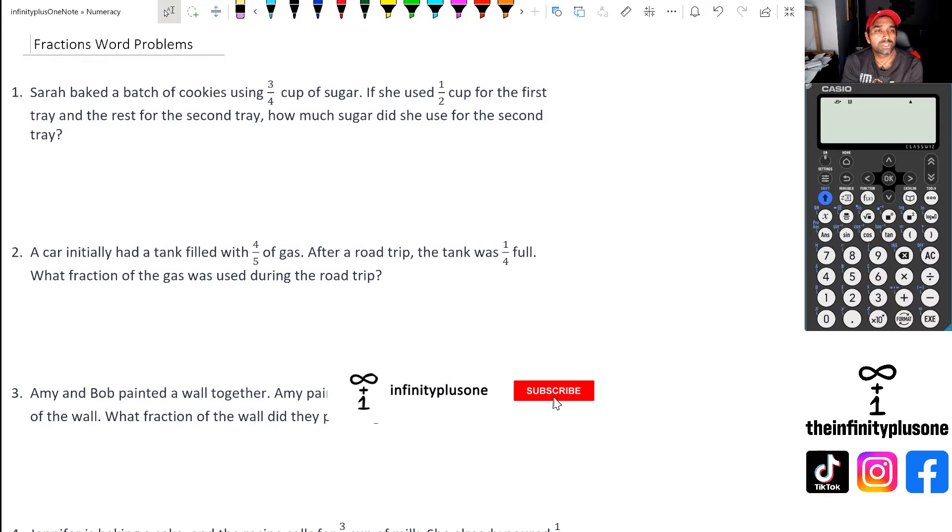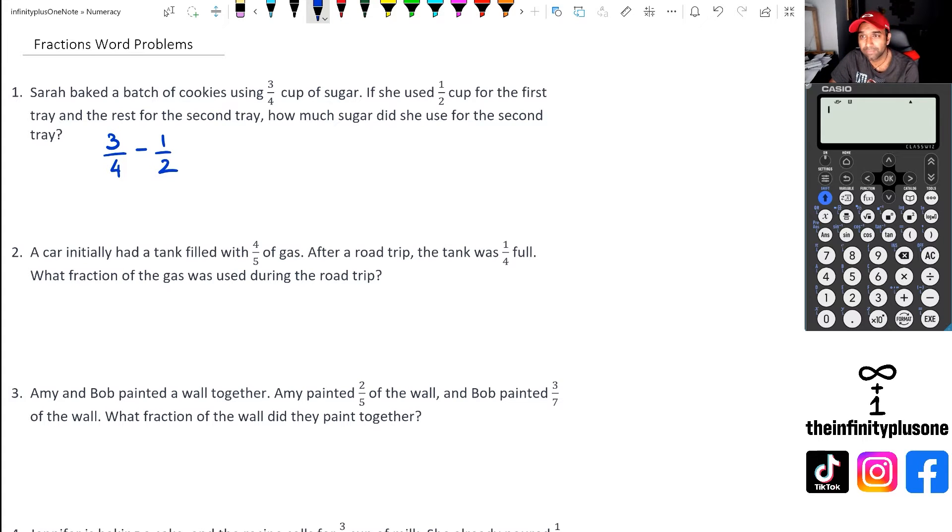Okay, so looking at question one, what we've got here is Sarah's baking, making a batch of cookies using three quarter cup of sugar. If she used half cup for the first tray and the rest for the second tray, how much sugar did she use for the second tray? So we've got three quarters and we are doing take away a half and we're trying to figure out what that is going to be. And if you've been following this particular video series, then you know that when it comes to different denominators, whether it's adding or subtracting fractions, we've got to make sure that the denominators are the same before we do the adding or subtracting.